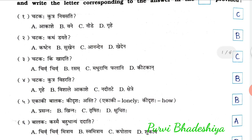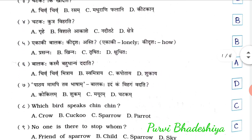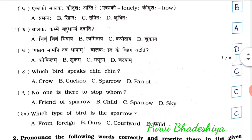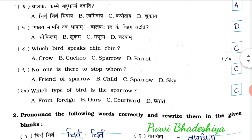5th, Eka ki bhalakha kidrusha hasti — the answer is B, Khinnaha. 6th, Bhalakha kashme bahudhaniam dadadi — the answer is A, Chiva Chiva Mitraya.